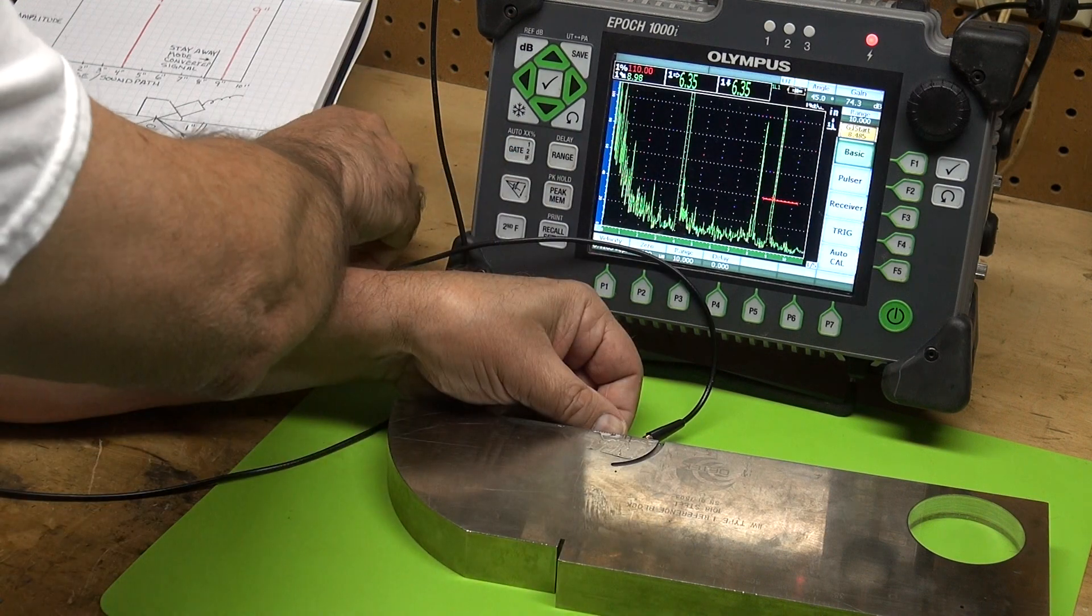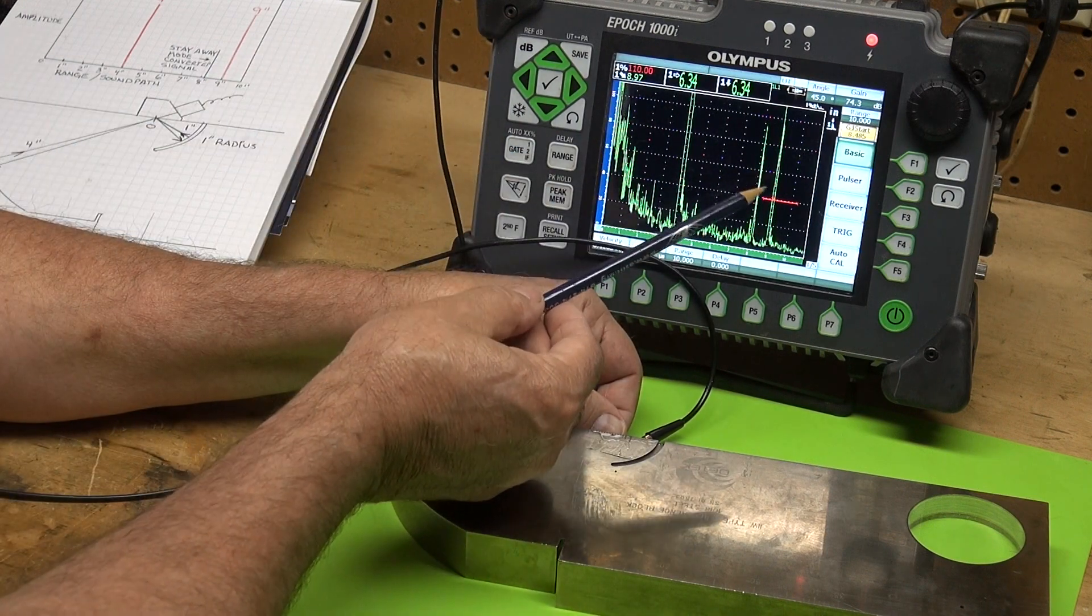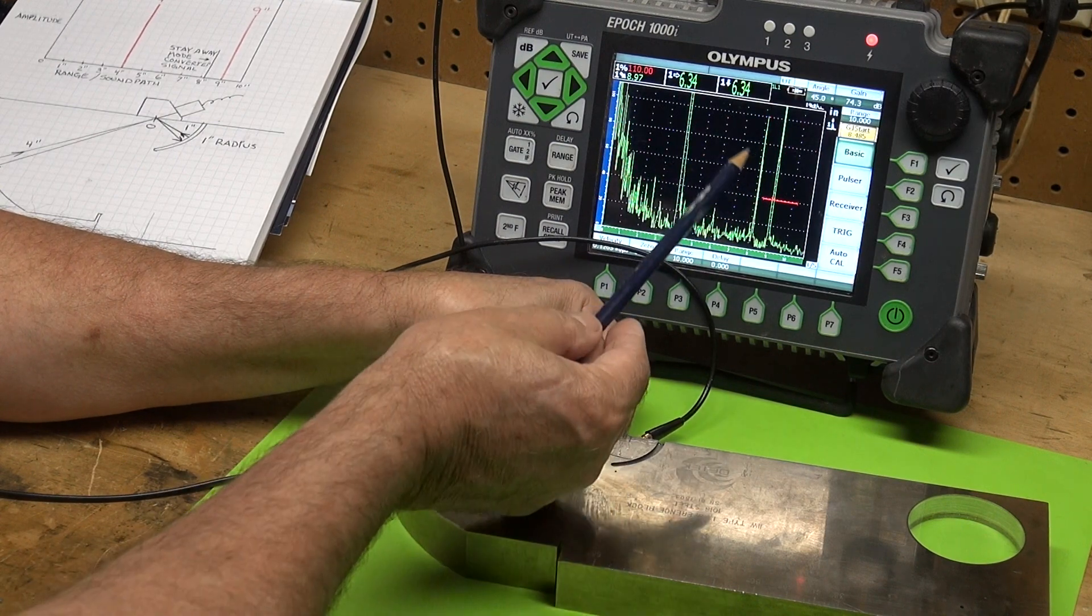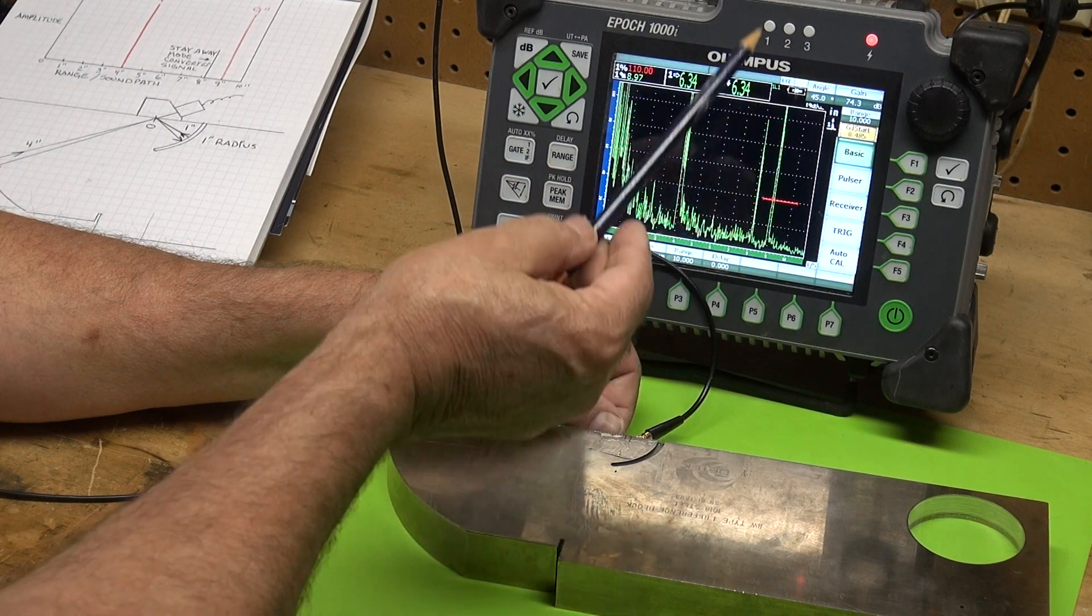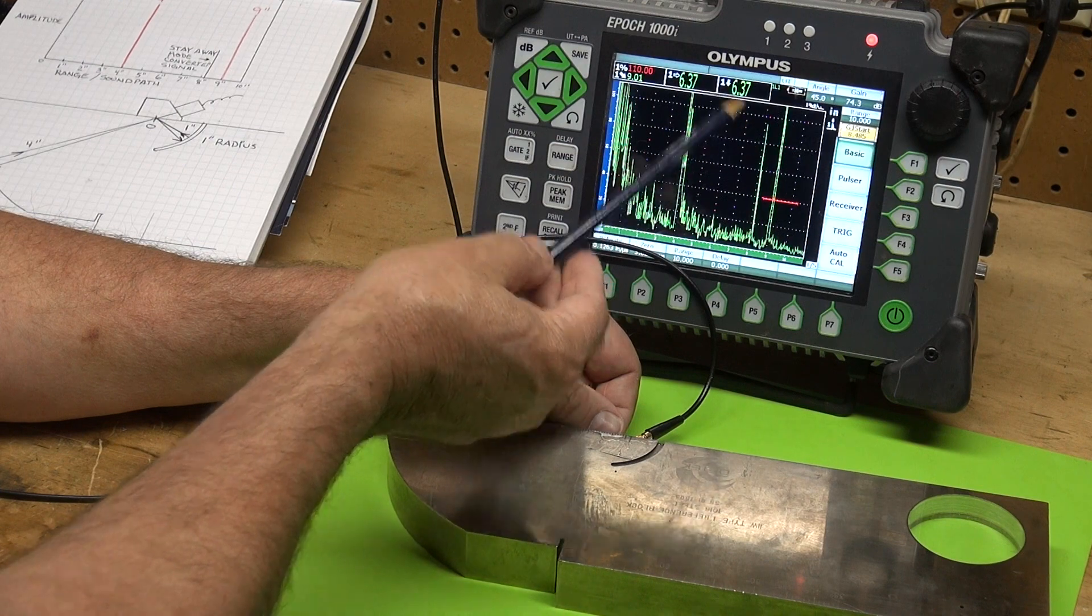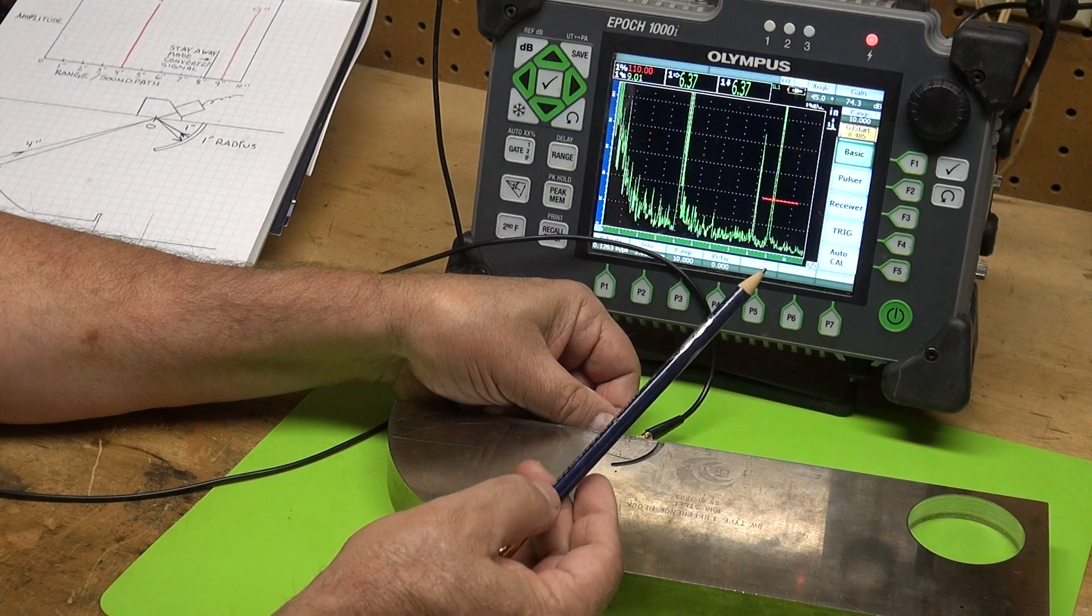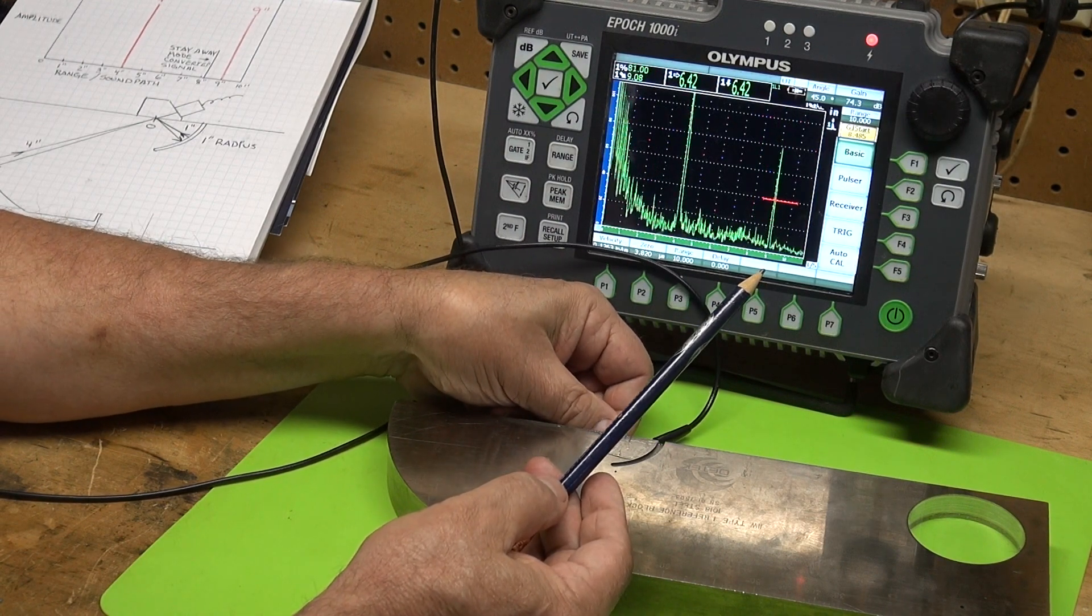That signal jumping up is trying to entice you and it's a mode converted signal, not the radius. So if you put your gate over this and calibrate with that reflector, you're going to be wrong. Your velocity is going to be wrong and your zero.